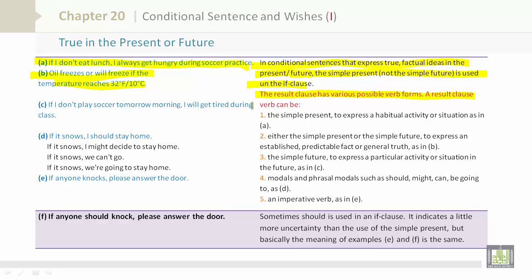Before we go on, let's look at C: If I don't play soccer tomorrow morning, I will get tired during class. This takes us back to the result clause, which has various possible verb forms. A result clause verb can be: 1. The simple present to express a habitual activity or situation, as in A. 2. Either the simple present or the simple future to express an established, predictable fact or general truth, as in B. 3. The simple future to express a particular activity or situation in the future, as in C.